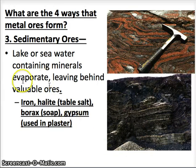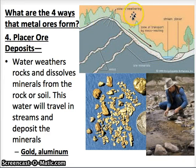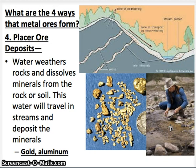Finally, we have placer ore deposits. This type of ore forms when water weathers a mountain, breaking away small pieces of rock and dissolving minerals from the rock or soil. The water travels down and deposits the minerals in a stream. Gold and aluminum are commonly found this way. This is a picture of someone mining for gold — you may remember learning about the California Gold Rush, where people flocked to California to pan for gold.